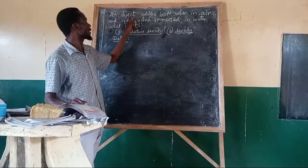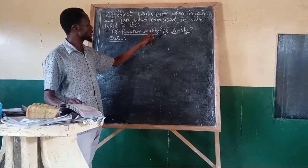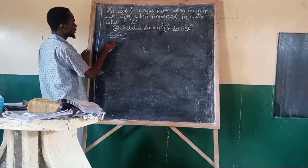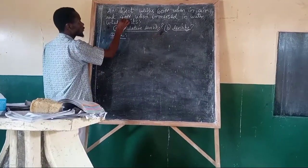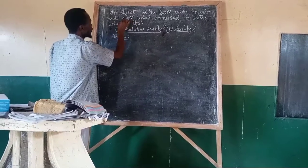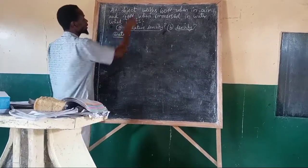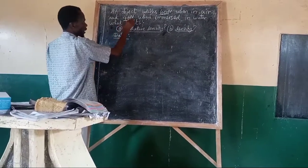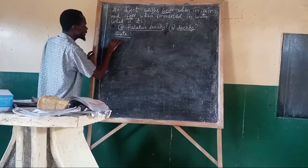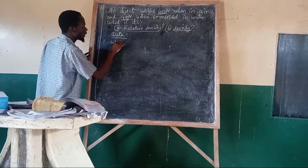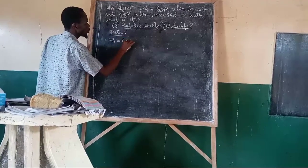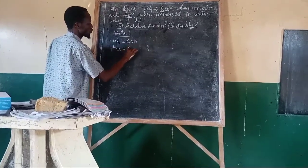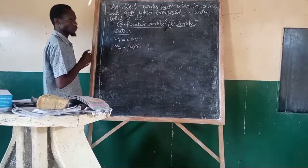So we are looking for the density of the substance and the relative density of the substance. We have weight in air, that is W1, equal to 60 newton, and weight in water, that is W2, equal to 40 newton. This is what we have.